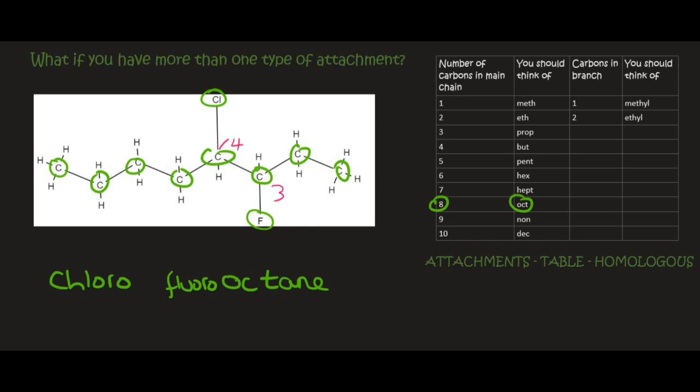Then we need to say where that happened. The chloro was on carbon three and the fluoro was on carbon four. Notice that between any word and number there always has to be a line. So that one is 3-chloro-4-fluoro-octane.